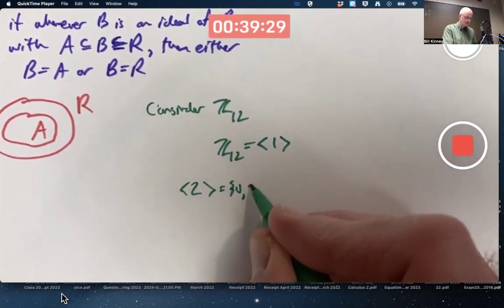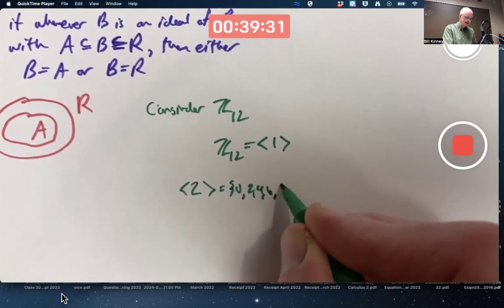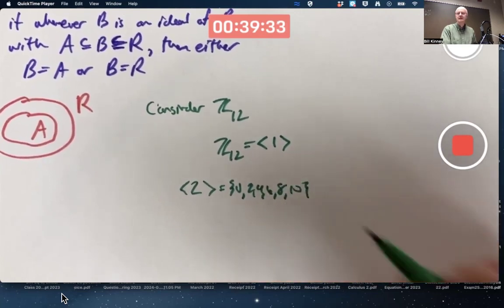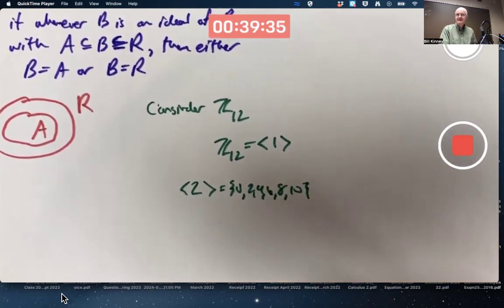It contains 0, 2, 4, 6, 8, and 10. That is the same as the principal ideal generated by 2.